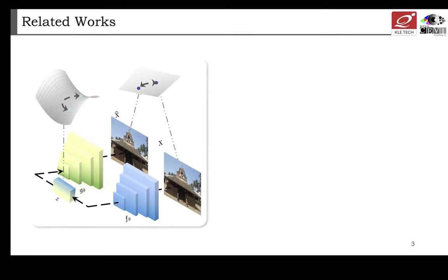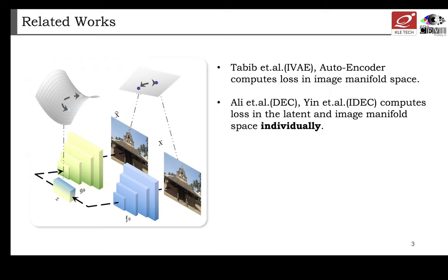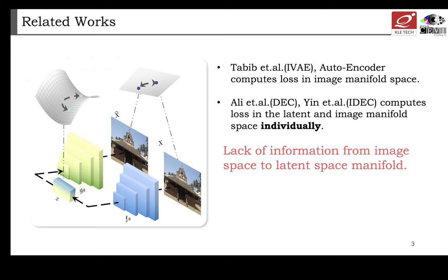For deep clustering, recent work uses autoencoder which computes loss in image manifold space. Ali et al., that is DAC, and IDEC, compute loss in latent and image manifold space individually. But there is a lack of information validation from image space to latent space.